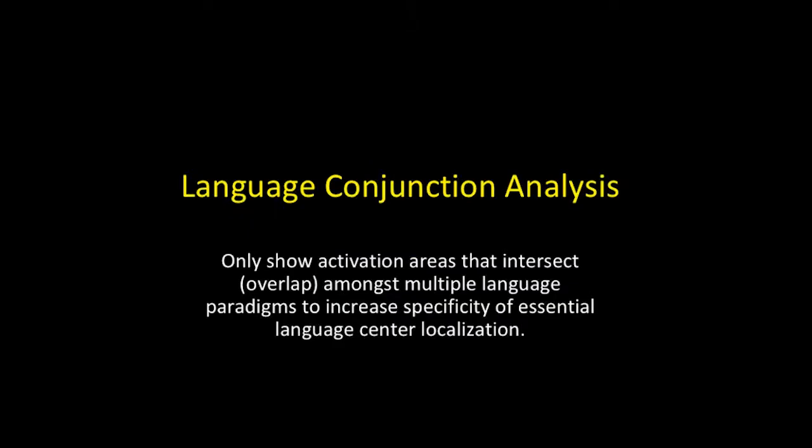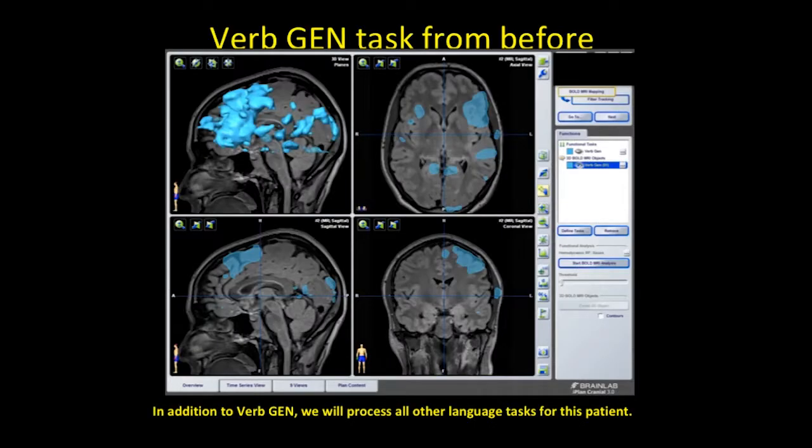This brings us to the next part: the advanced language analysis of bold data. What we just went through is conventional, one task at a time. With conjunction analysis, we're going to show activation areas that intersect or overlap amongst multiple language tasks to increase specificity and our laterality index, so we can see essential language center localization and more easily ignore noise in our data. It's also easier for trainees to understand the language data.